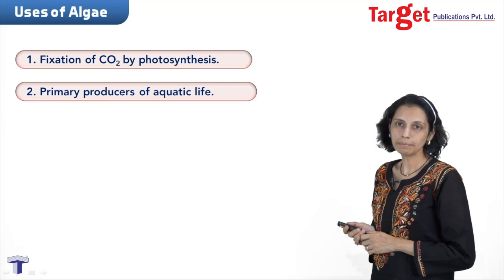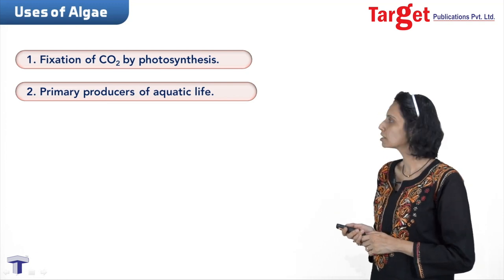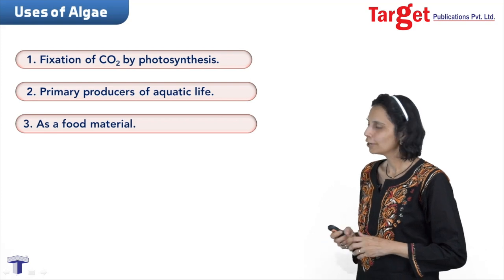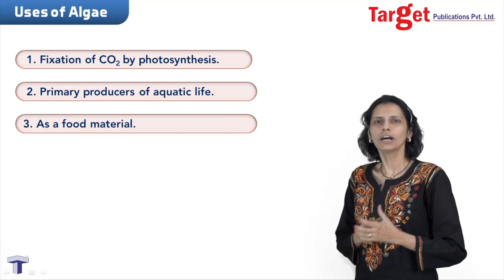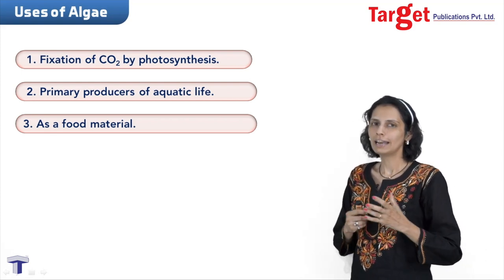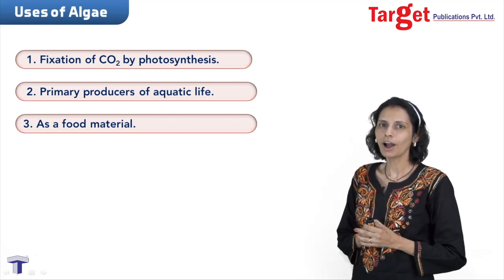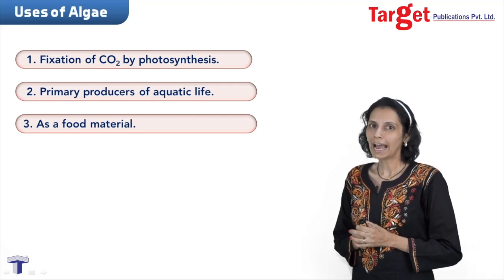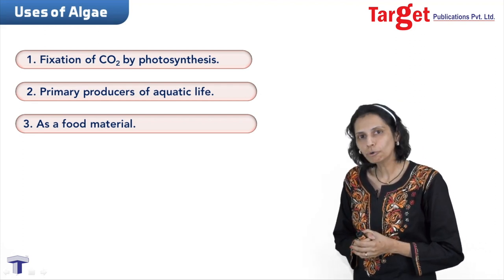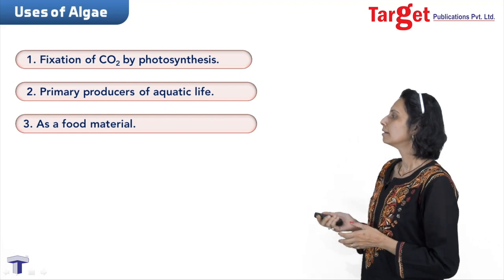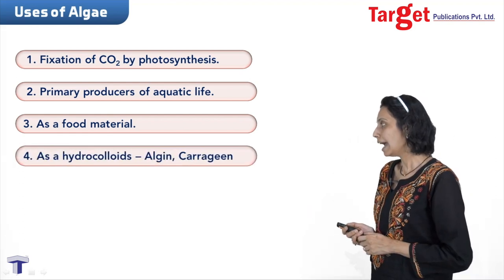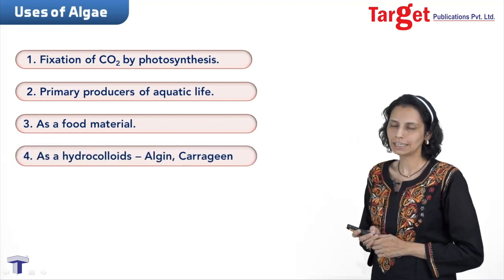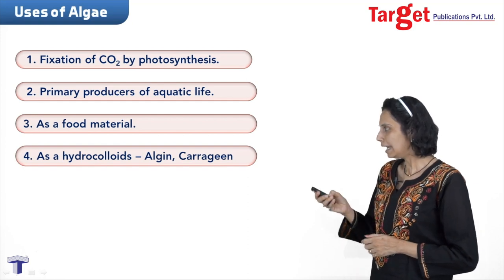Algae are the primary producers for aquatic life food material. Algae like Porphyra, Laminaria, and Sargassum are used as food material. Some brown algae like algin and some red algae like carrageenan are used as hydrocolloids.